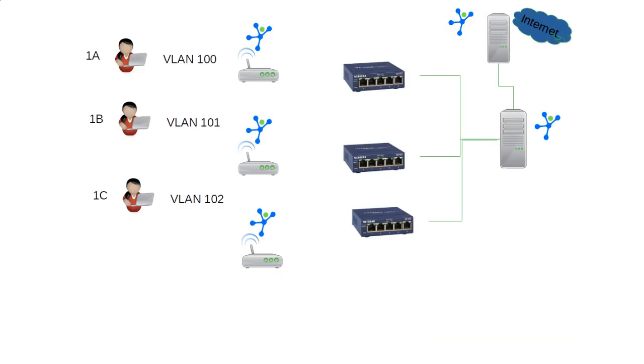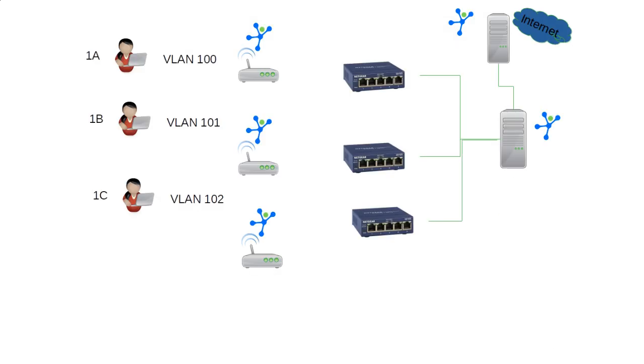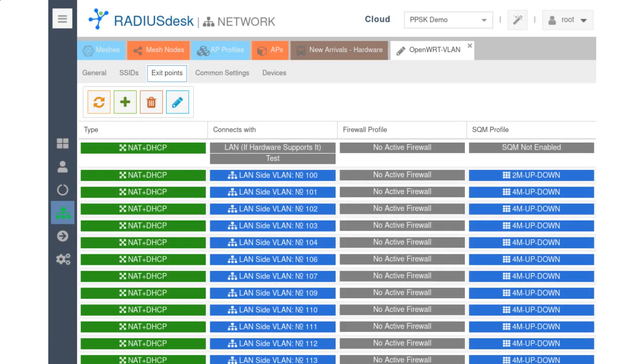In an MDU deployment, SQM Profiles can be applied at the central VLAN networks, where NAT and DHCP breakout points connect to the internet.